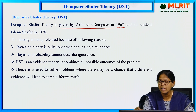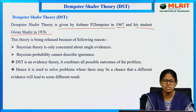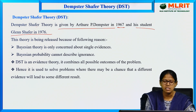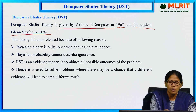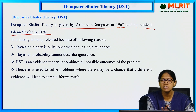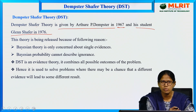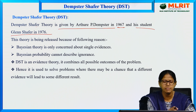Arthur P. Dempster in 1967 and his student Glenn Shafer in 1976 — these are the two scientists who gave this Dempster-Shafer theory. The name is also derived from their names. Already we have two measures to find out uncertainty in a statement, like Bayesian and certainty factor.